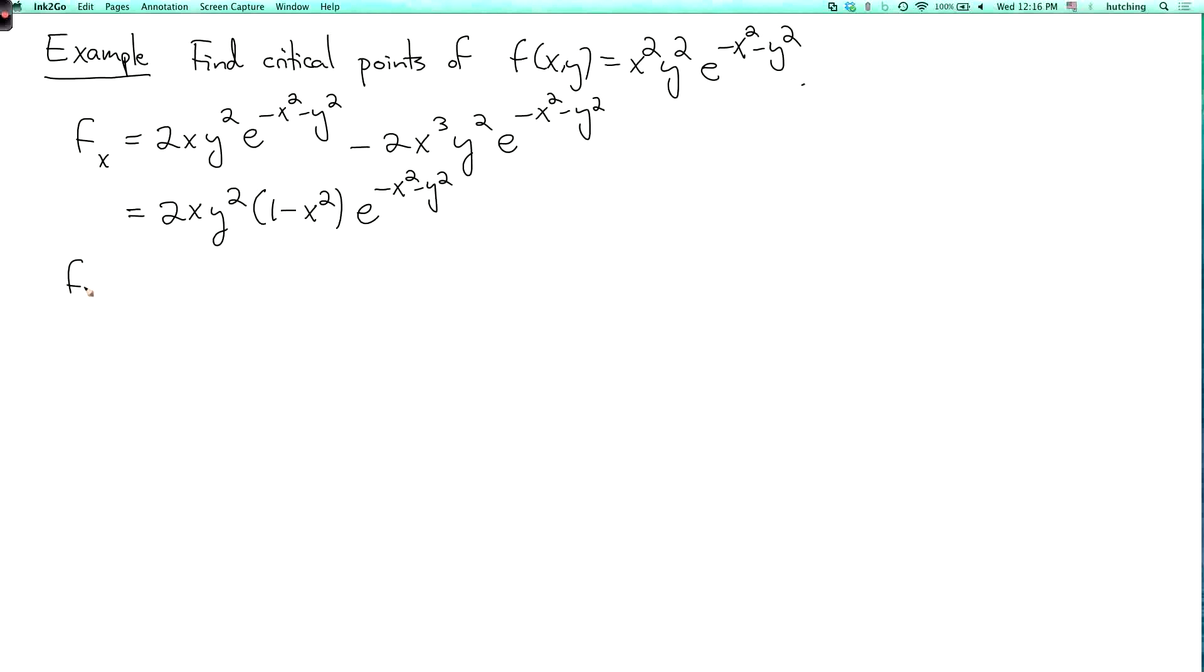And then that's all multiplied by e to the minus x squared minus y squared. And fy, well, it's symmetric with respect to x and y, so we just have to switch x and y everywhere. So we get 2x squared y, 1 minus y squared, e to the minus x squared minus y squared. So where are these both equal to 0?